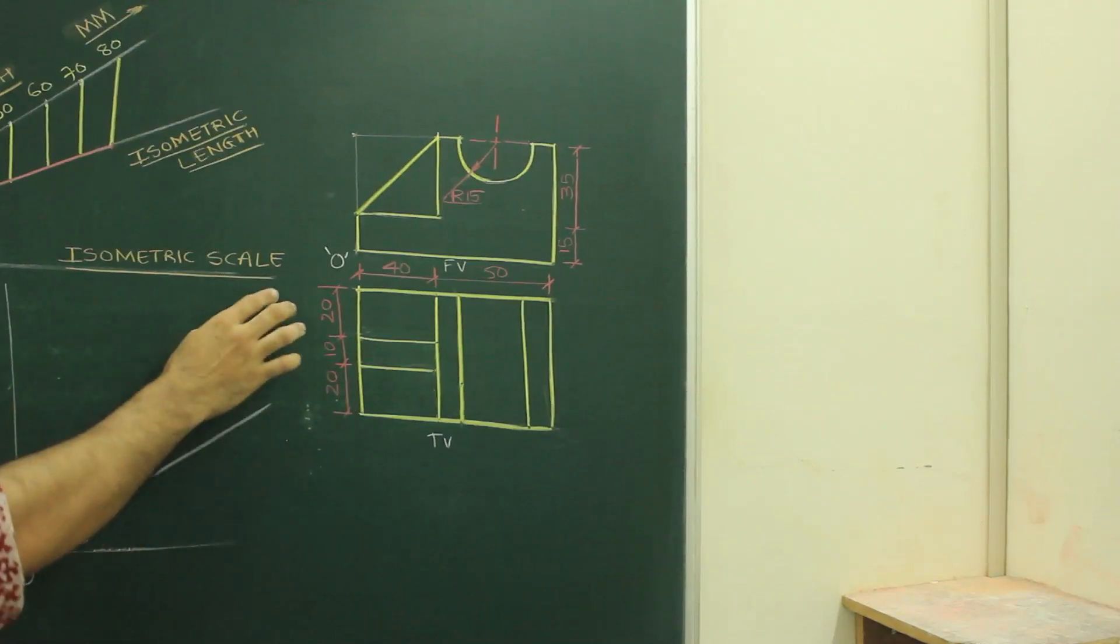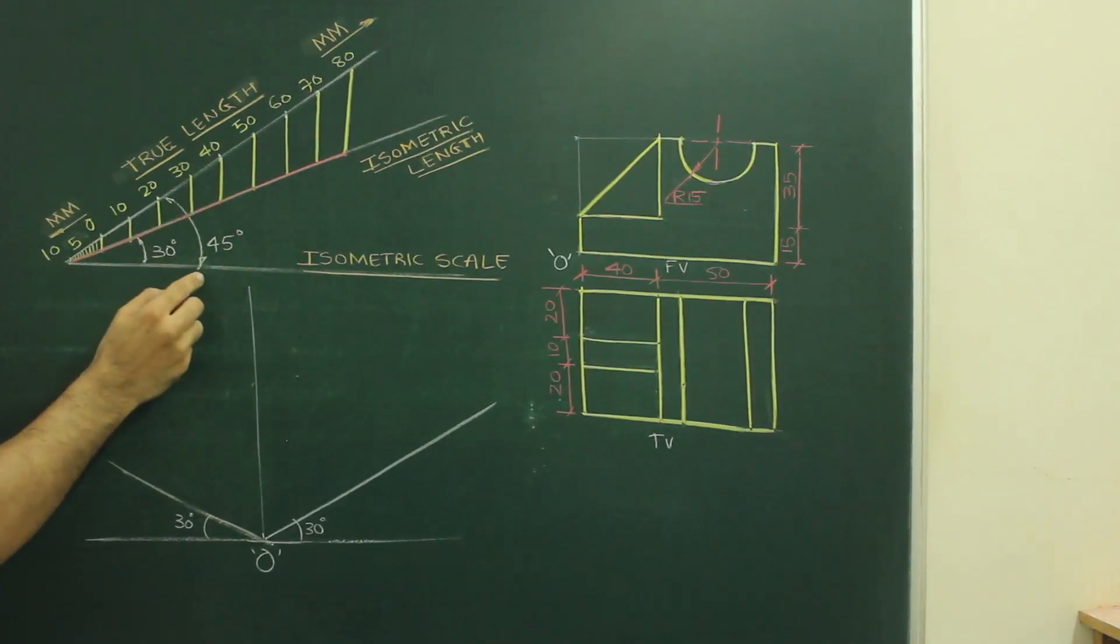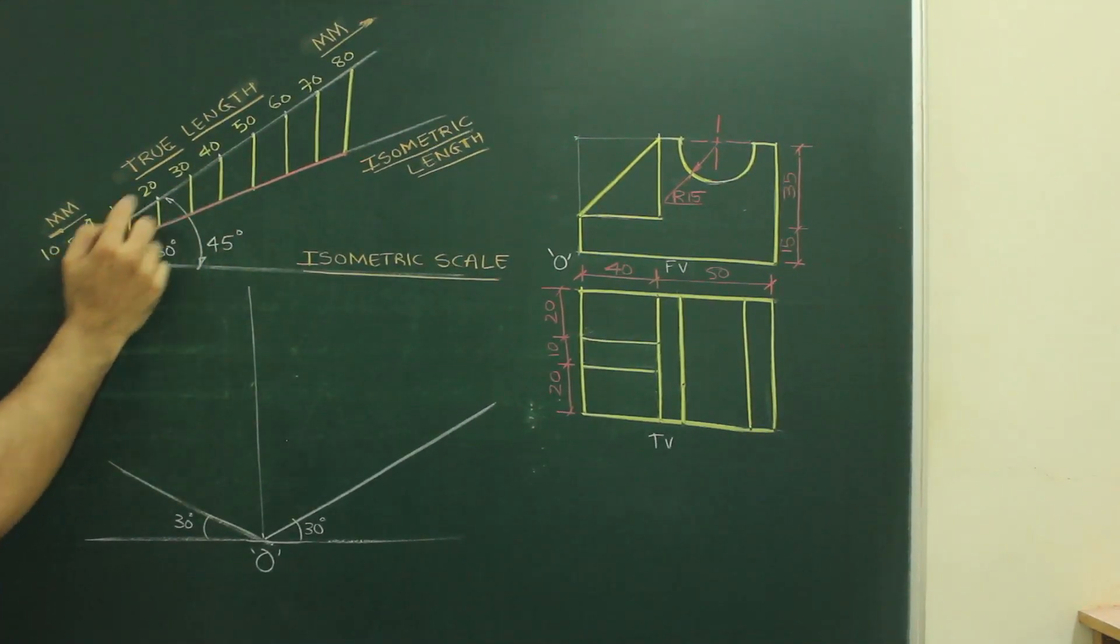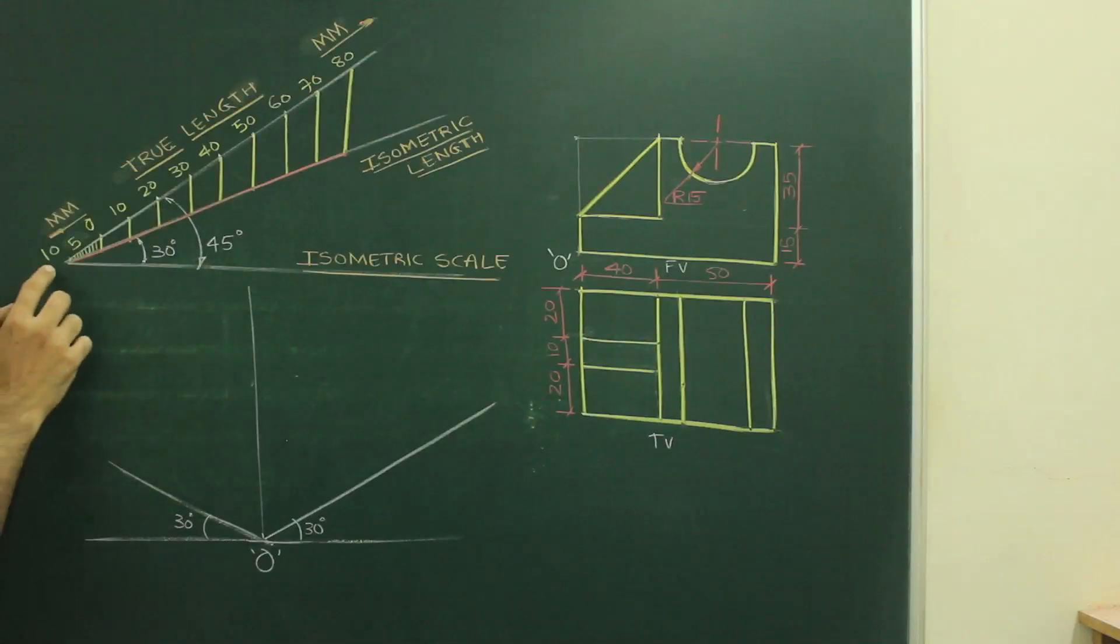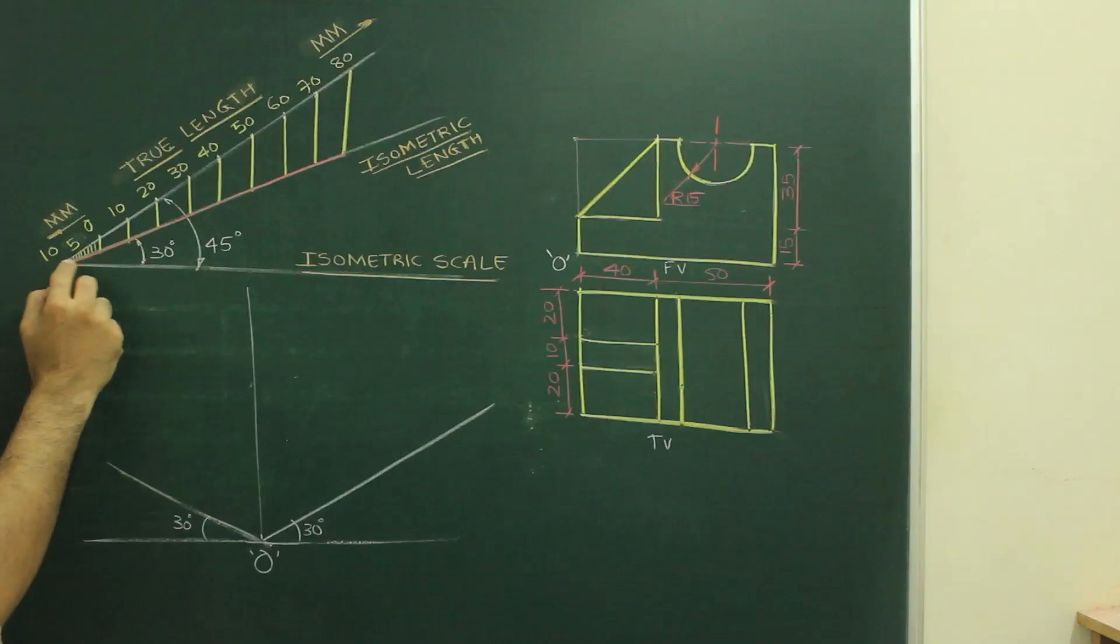So what we need to do, first we need to draw isometric scale. That is, first you need to draw angle 30 degree, then 45 degree. And on this 45 degree line, you have to mark true length. So what is the maximum length? 90.